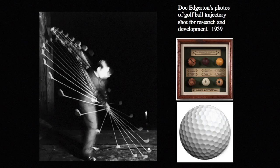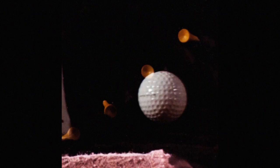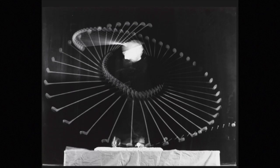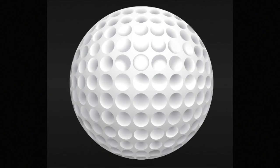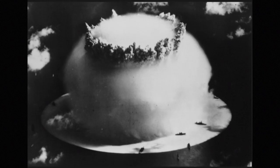One of his very first experiments was showing a golf ball trajectory shot for research and development in 1939. In fact, the golf ball today, which has those little dimples on it — he was the one that invented that. Before his groundbreaking experiments and photographs of how a club head hit a golf ball, there was no knowledge about what happened, how the golf ball compressed and then left the club head, and how it flew. He developed several different golf balls and eventually came up with all of those dimples to make it fly straight, and he did this with high-speed photography.